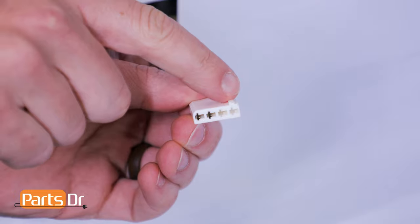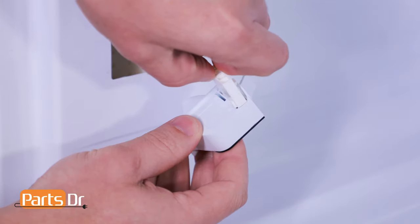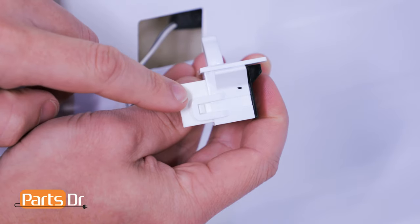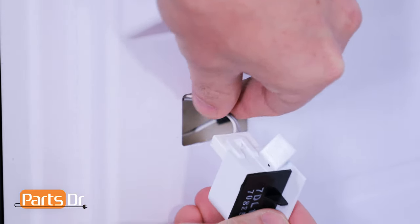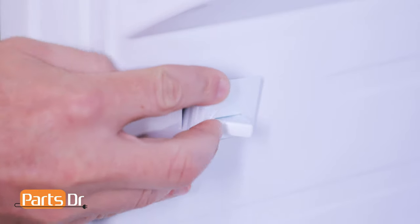To install the switch, make sure the tab on the electrical plug is aligned with the notch on the switch. Then push together until the locking tab snaps into place. Next, tuck in the wires, then insert the electrical plug end of the switch first, rotate, and snap into place.